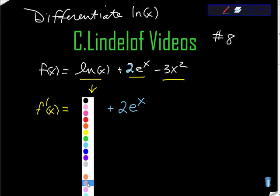And just going to keep working my way down, the first derivative of negative 3x squared is negative 6x.